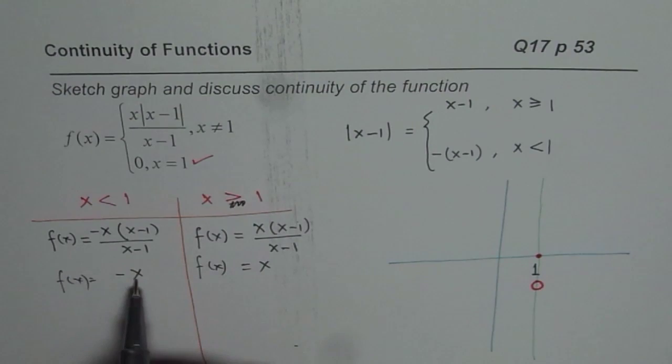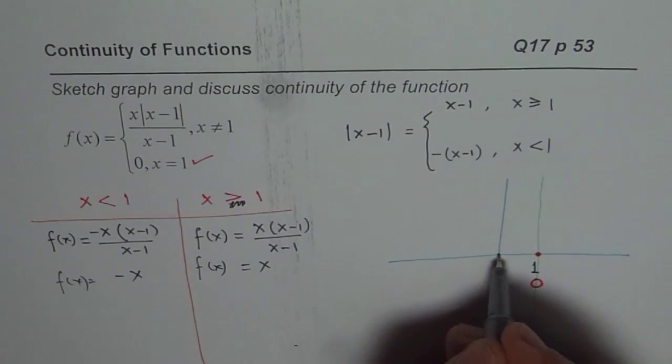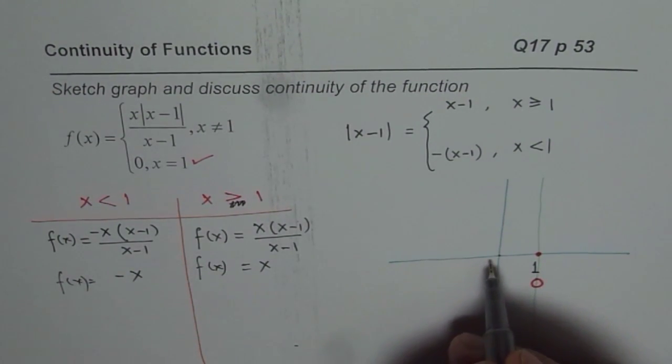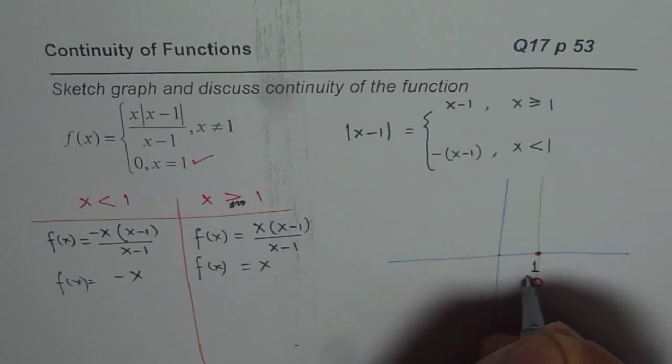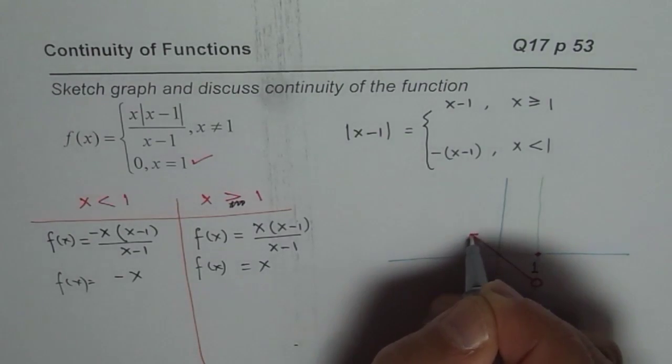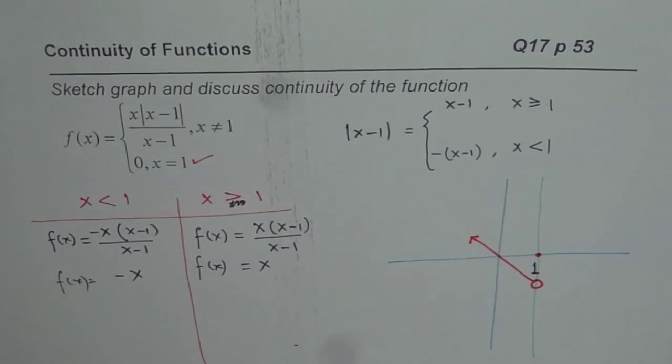Now if I write x as 0, it will be 0, so that will be included. If I write x as -1, it will be -2. So in a way, what you find here is that this will be a line which will go like this. So that is the left side.